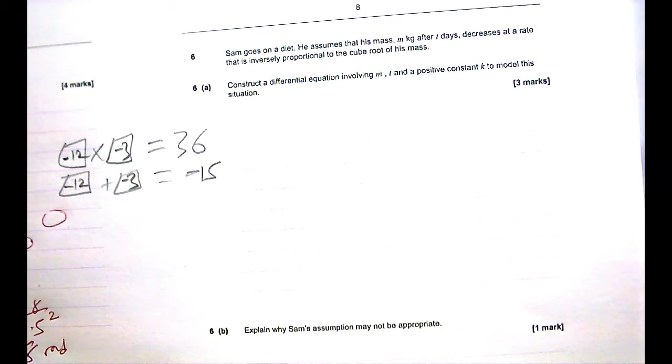Okay. Let's look at question 6. Sam goes on a diet. He assumes that his mass m after t days decreases at a rate that is inversely proportional to the cube root of his mass. Construct a differential equation involving m, t and positive constant k to model the situation.